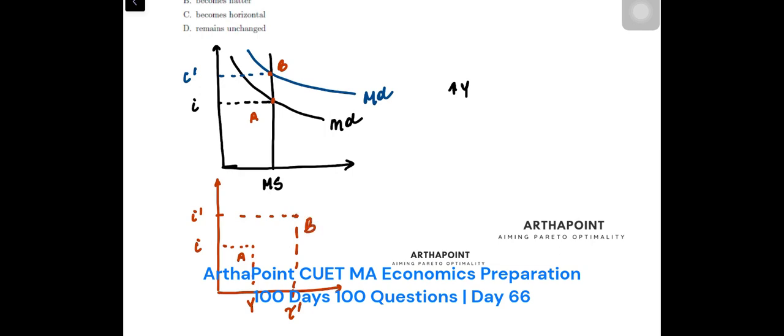This is point B and this is your LM curve. I've taken income like that, no point to show income, so I've just taken it like that. Now suppose the question is saying that your money supply curve is positively dependent on the interest rate.